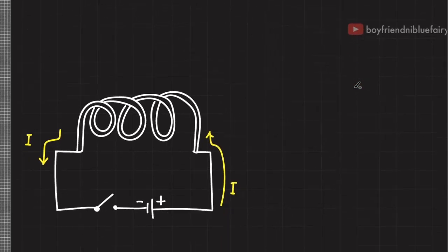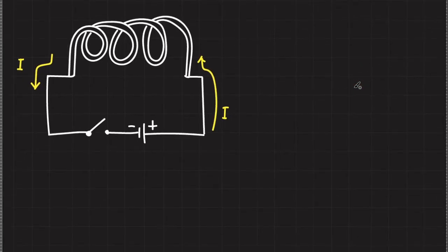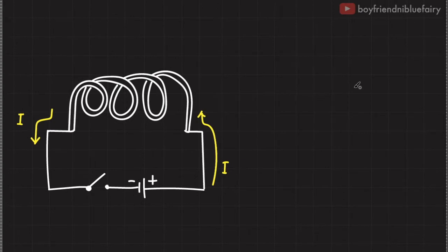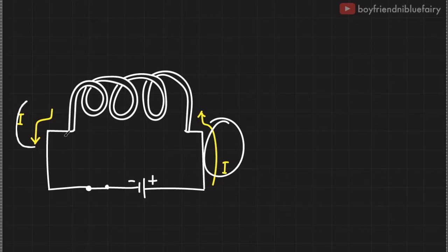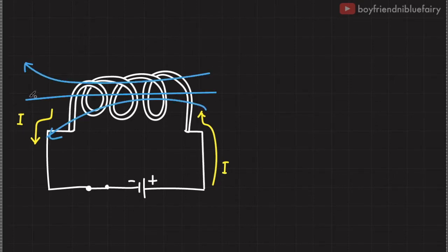To further elaborate this process, consider this coil of wire connected to a switch and battery. When I suddenly close this switch, current flows through the coils and the coil generates a magnetic field. However, during the quick initial surge of current through the circuit, the current increases from 0 to a steady value. But during this transition, the magnetic field also increases from 0 to a steady value.